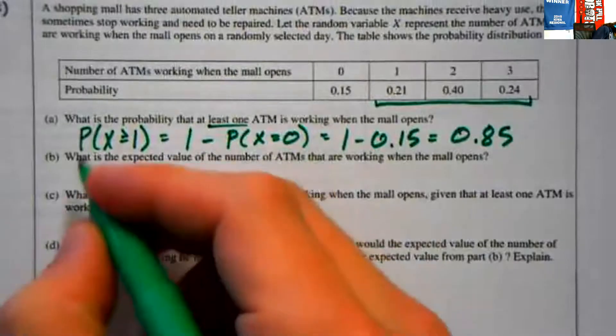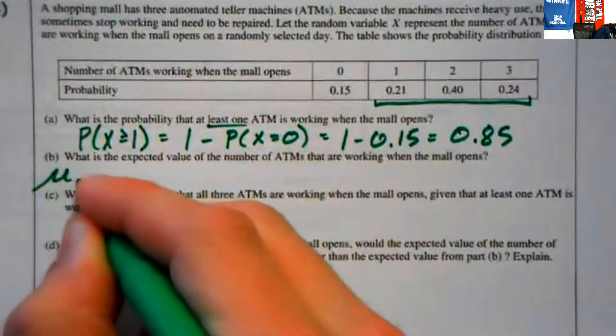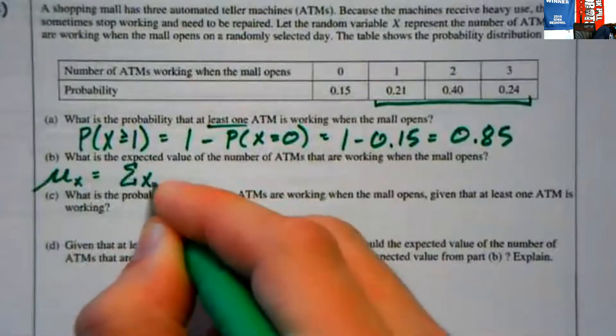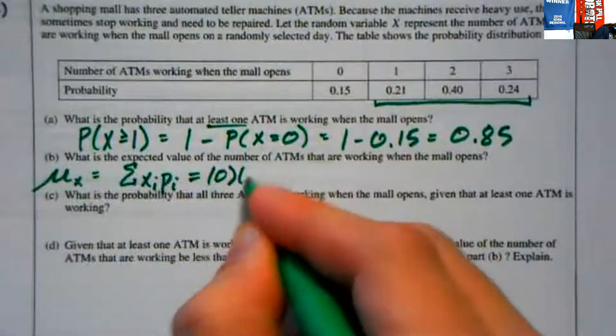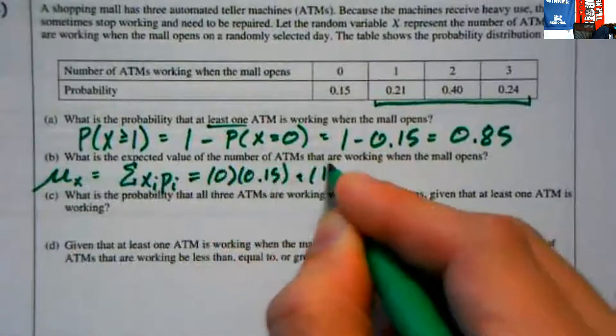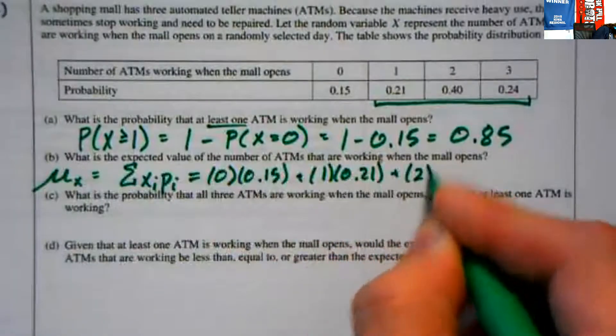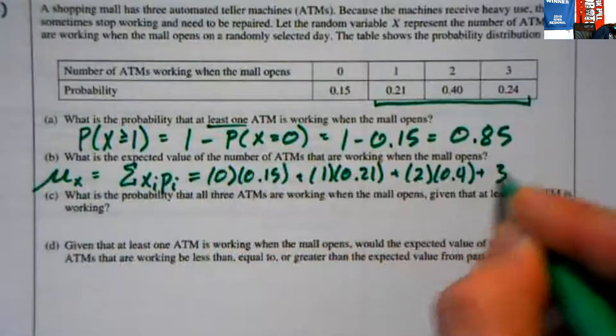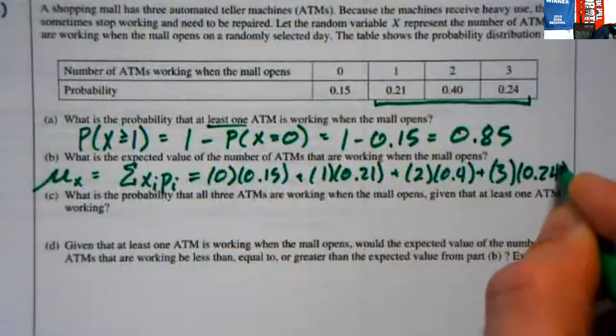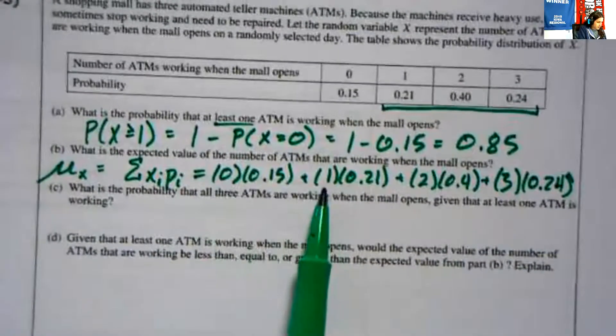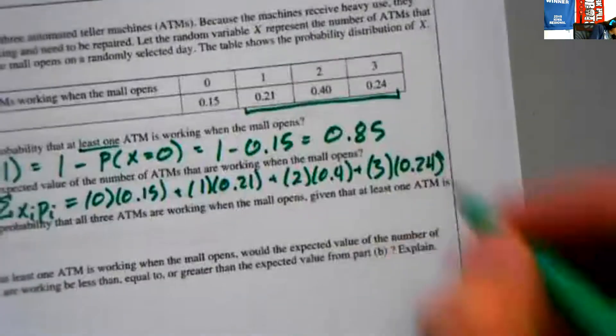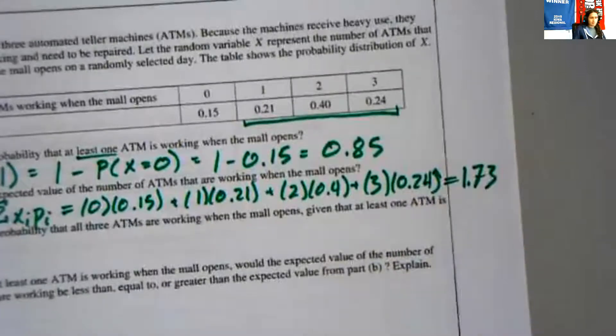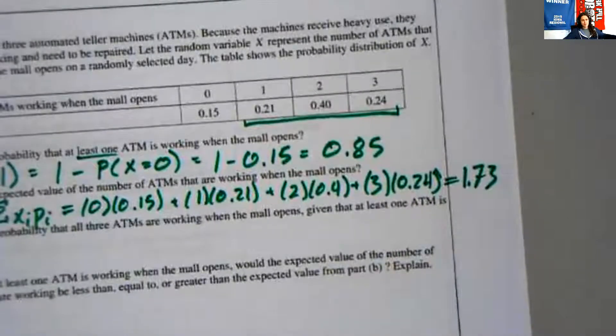Part B, what's the expected value? The expected value of X is the sum of the values times their probabilities. It's going to be 0 times 0.15, 1 times 0.21, 2 times 0.4, and 3 times 0.24. You do that, that's 1.73. So something like on average, 1.73 ATMs are open, are working when the mall opens.